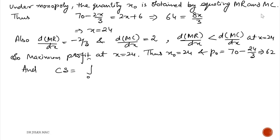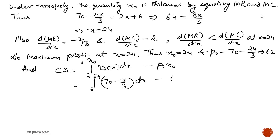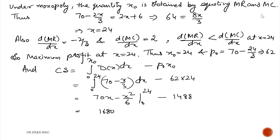Now we calculate the consumer surplus. The formula is: CS = integration from 0 to x0 of the demand function dx minus p0·x0. So CS = integration from 0 to 24 of (70 − x/3) dx minus 62×24. After simplification, consumer surplus equals 96.